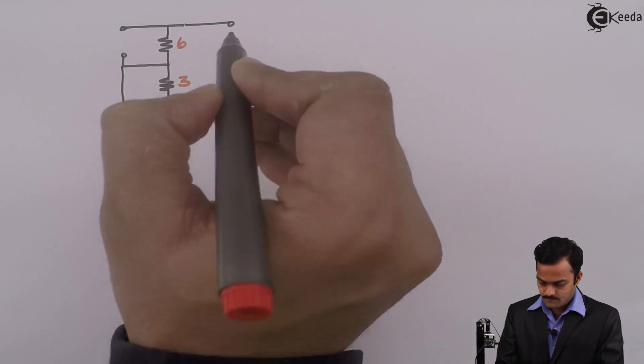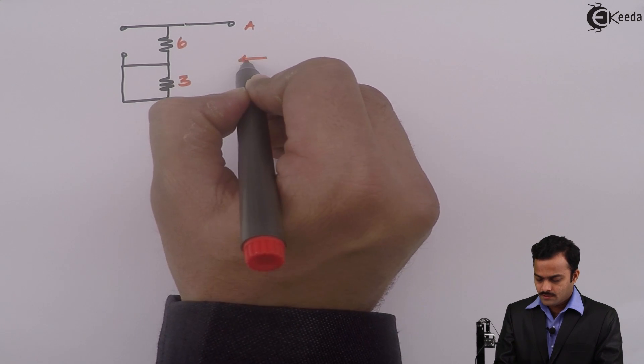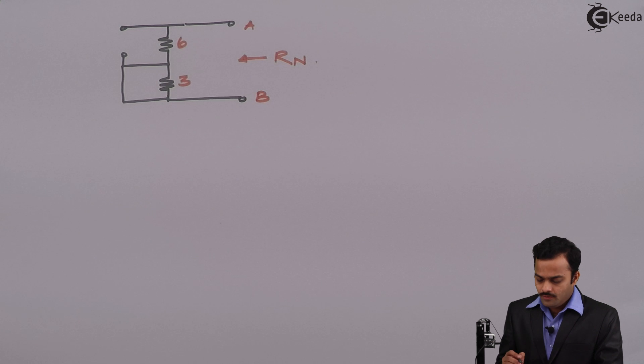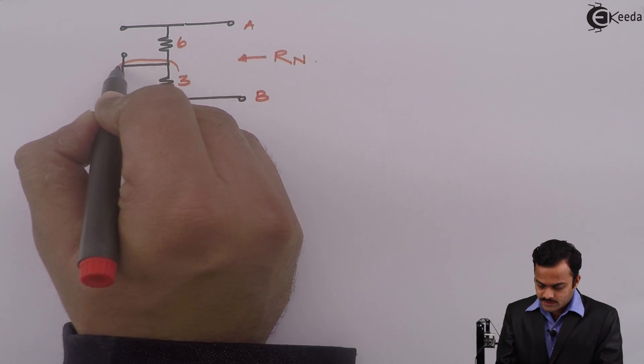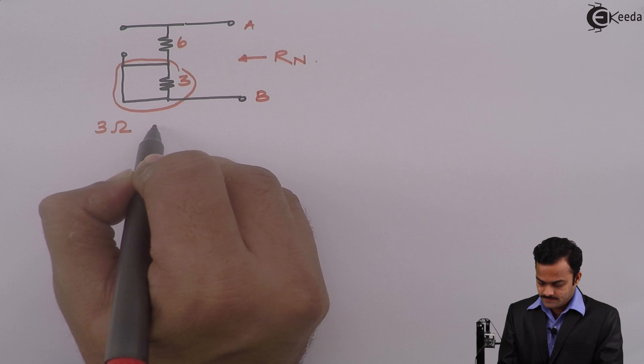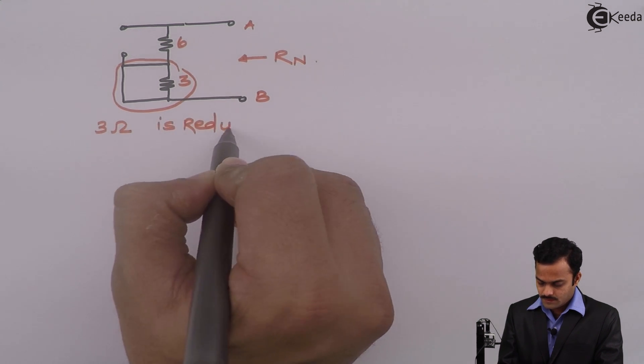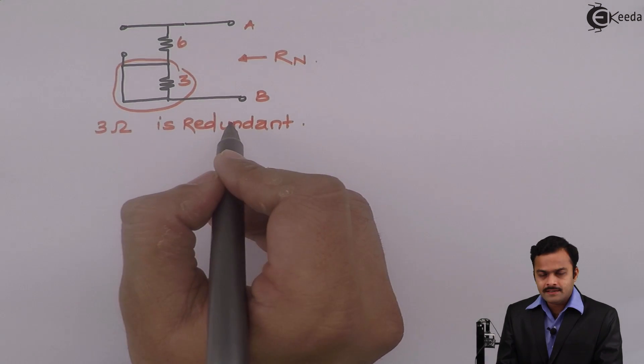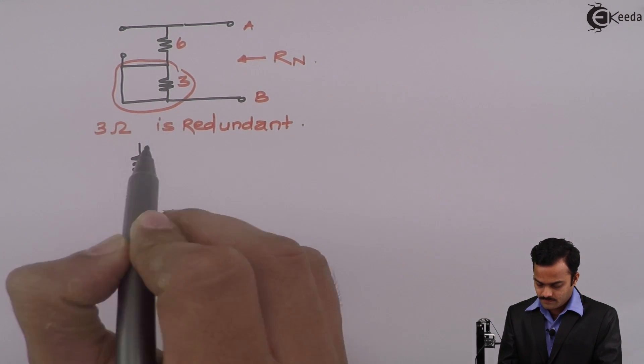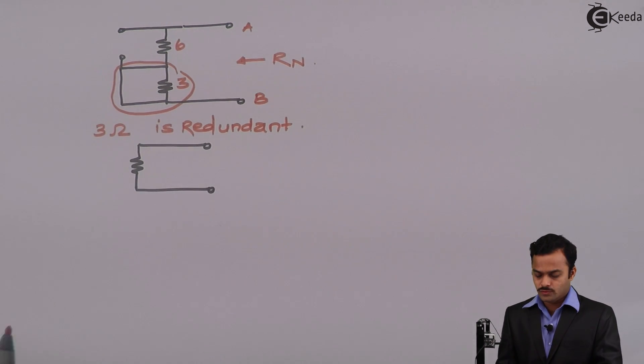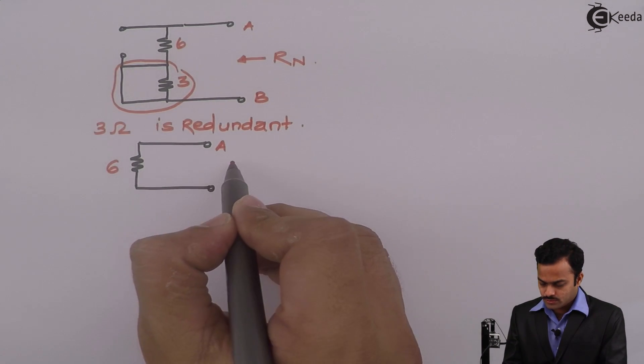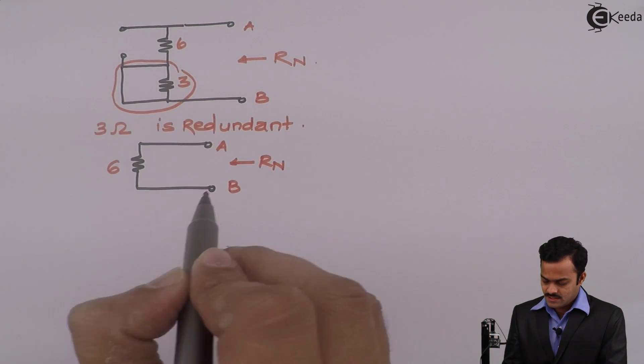So let's see how the resultant circuit will look like. 20 volt is shorted, 10 ampere is open, and these terminals will be open-ended A and B, and across here we need to find out Rn using series parallel combinations. Now see properly, this 3 ohm is connected across a short circuit. Because of that I can say it is redundant. So 3 ohm is redundant. What is the meaning of redundancy? As if 3 ohm is not there in the circuit. So the equivalent circuit will look like this: only one resistance you will have and that is of 6 ohm.